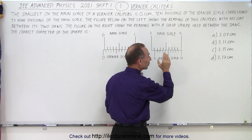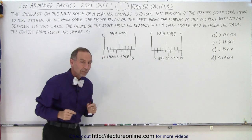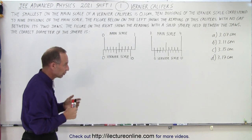But the reading we got from here will not be the correct size of the sphere because we did not have a zero on the zero reading. So we need to adjust.